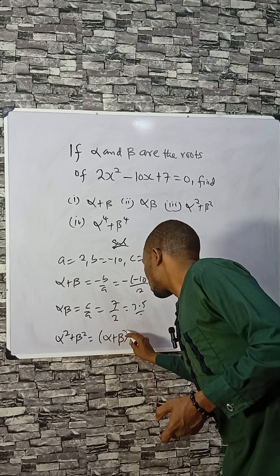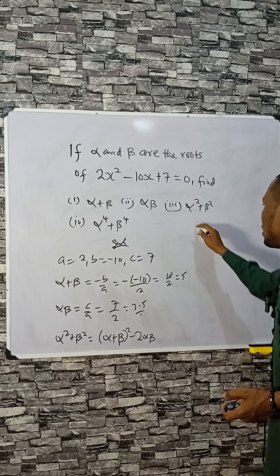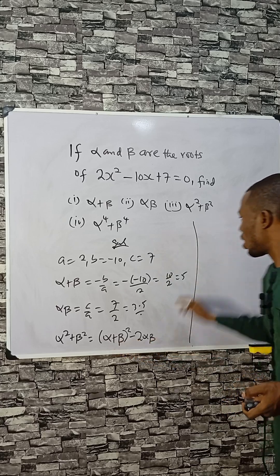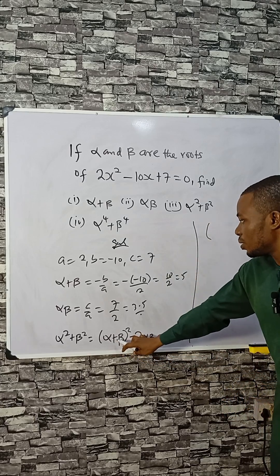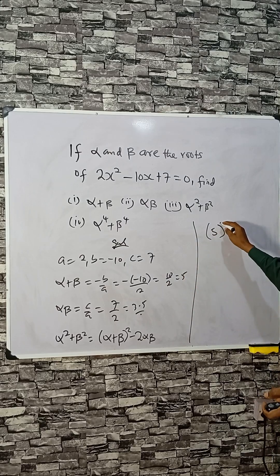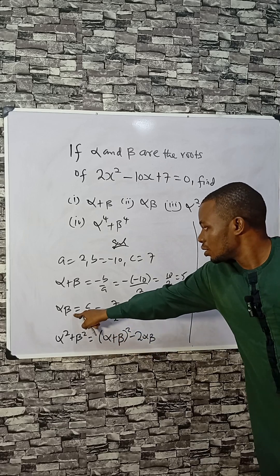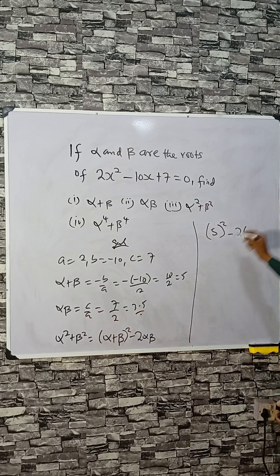So alpha plus beta is 5, 5 squared, minus 2 alpha beta. Alpha beta here is 7 by 2, so this can cancel. 25 minus 7, that is 18.